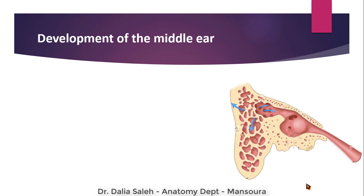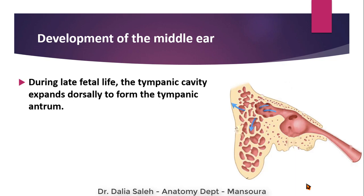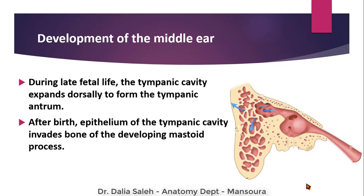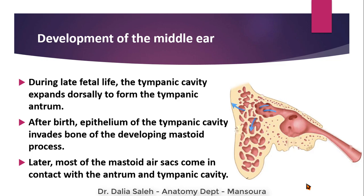In this section, we can notice the middle ear cavity, the Eustachian tube, and the mastoid air cells and mastoid antrum. During late fetal life, the tympanic cavity expands dorsally to form the tympanic antrum. After birth, the epithelium of the tympanic cavity invades the bone of the developing mastoid process. Later, most of the mastoid air sacs come in contact with the antrum and the tympanic cavity.